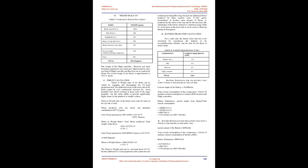Weight buildup — Component weight datasheet: BLDC motor (×8): 308.8 g; ESC (×8): 208 g; Propeller (×8): 30.4 g; Battery for top side rotors: 690 g; Battery for downside rotors: 615 g; Receiver + flight controller + fastening components: 100 g; Frame: 300 g; Total (approximate): 2,251.14 g. The weight of the flight controller, receiver, and other fastening components were taken as approximations since any kind of flight controller and receiver can be used in the drone. The overall weight of the drone is approximated as 2,251.4 grams.